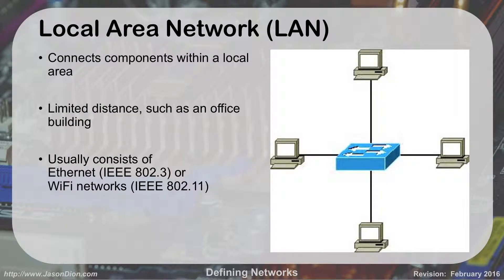As we go out, we start talking about a local area network, probably the most common network most people think of. This is the network in a local area like your house or your school. At home, if you have Comcast or Verizon internet service, you'll use a wireless network — that wireless network is the local area network. It has a limited distance: in an office building, generally a couple of hundred meters; with wireless, usually less than a hundred meters. It consists of either Ethernet, which is wired, or Wi-Fi, with standards 802.3 and 802.11.